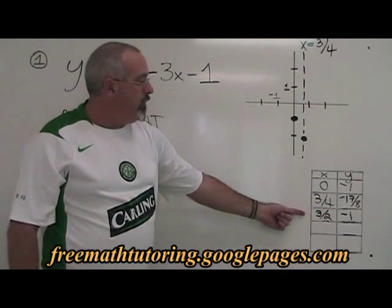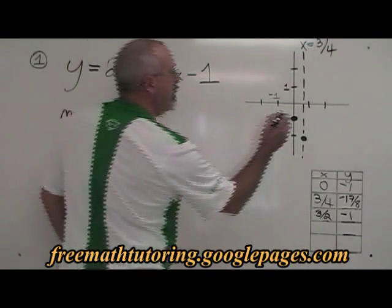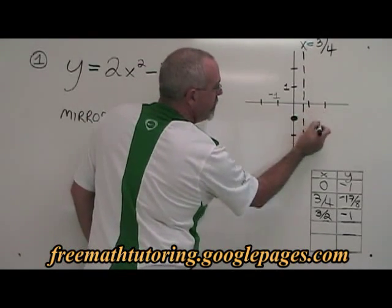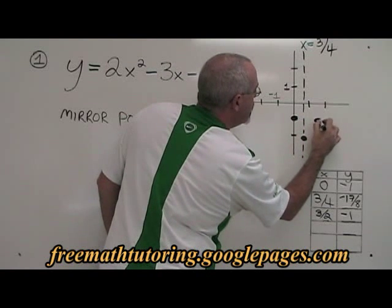These are the coordinates of our mirror point, and I will graph them now. 1 and a half is here, and negative 1 is here, so our mirror point is right here.